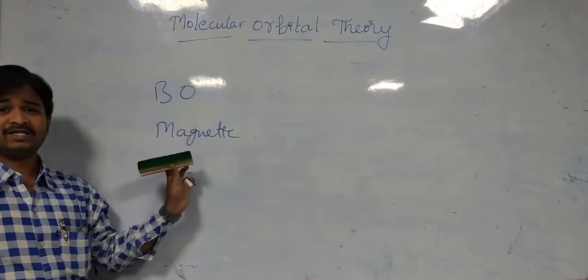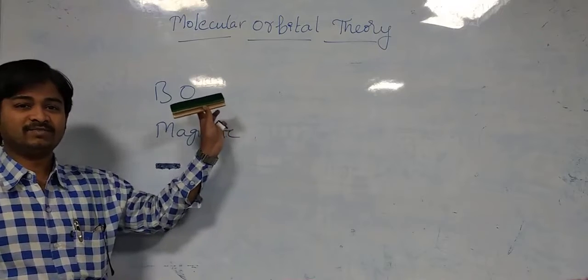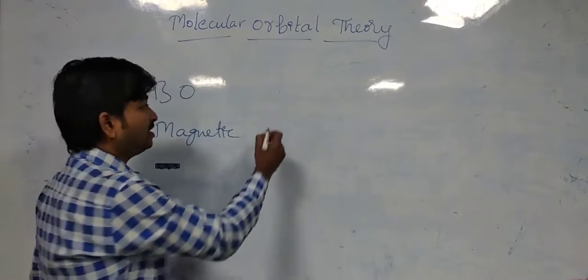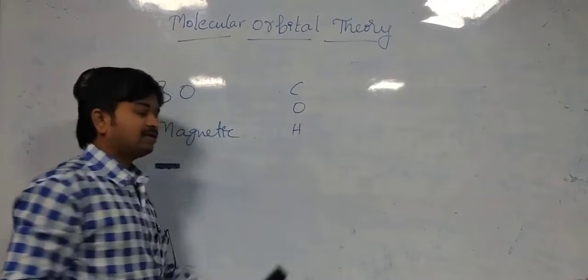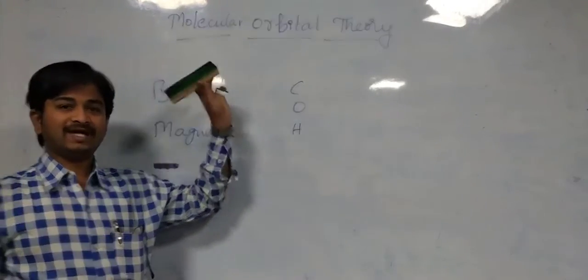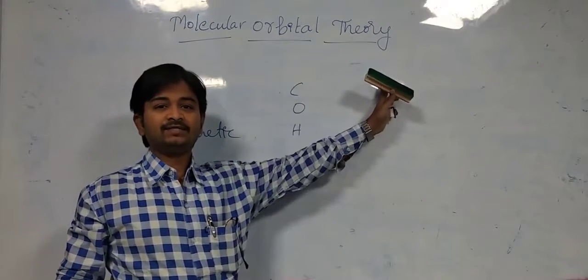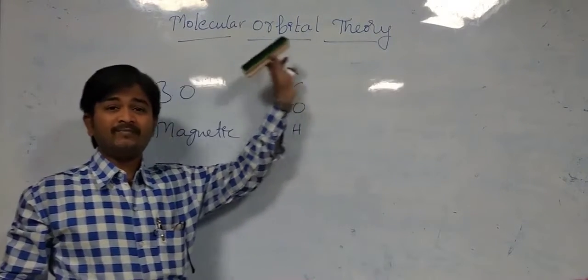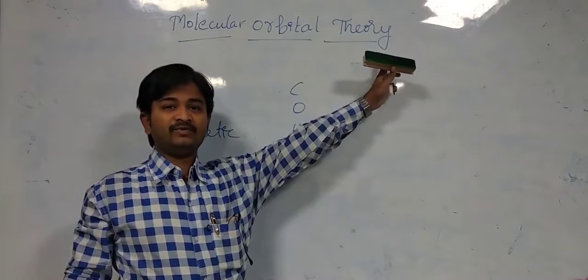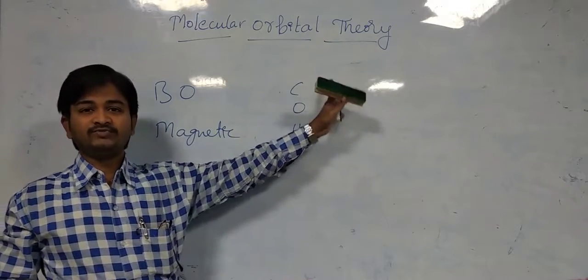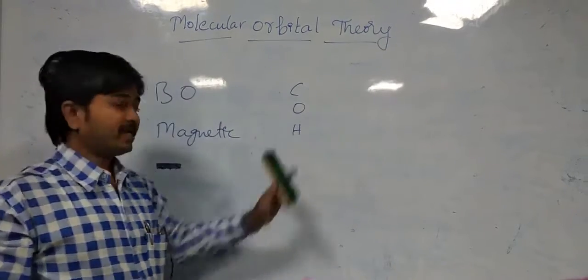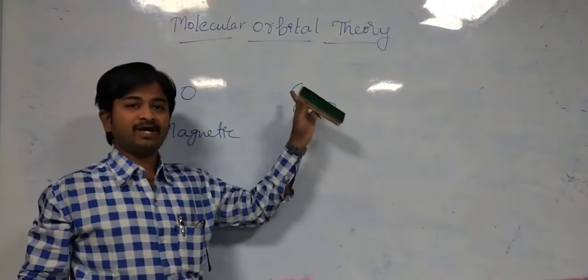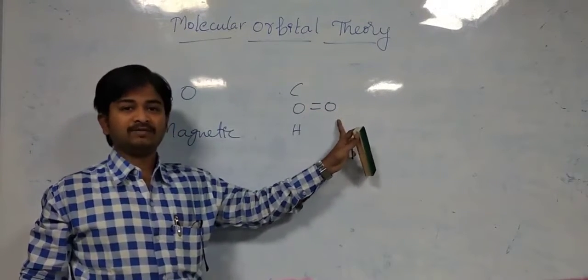Let us know the applications of bond order and magnetic properties. What is bond order? Bond order is the number of bonds between two atoms. For example, if you take carbon, oxygen, or hydrogen — these are all called atoms. So whatever atoms are there, they get bonded with another atom to give a molecule. The number of bonds formed between two atoms is called the bond order.